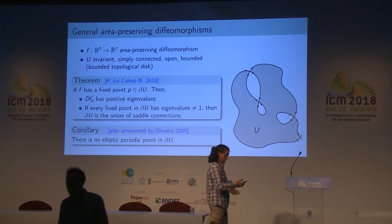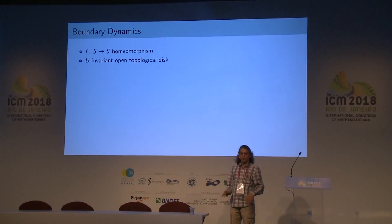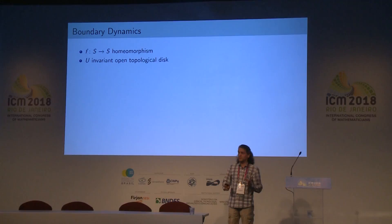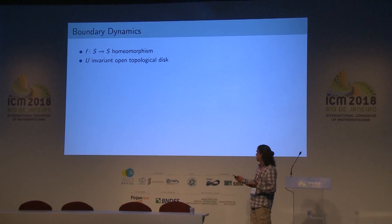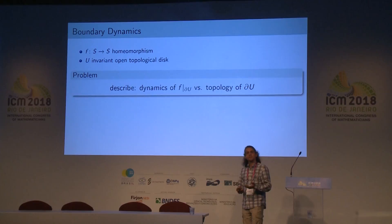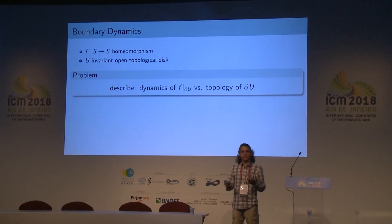I will talk about the topological part. I'll start from scratch and restrict my attention to homeomorphisms of a surface. The question I will consider is: given an invariant open topological disk U on my surface, I want to describe the dynamics of the homeomorphism on the boundary of U and its relation to the topology of the boundary. By topological disk I mean a simply connected open set. I'm assuming simply connected because it's easier; you can later adapt these results to more general open sets by surgery arguments or other means.